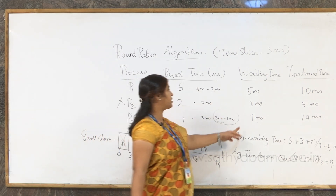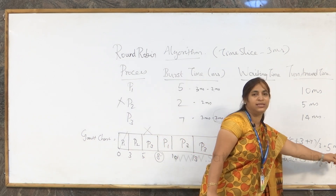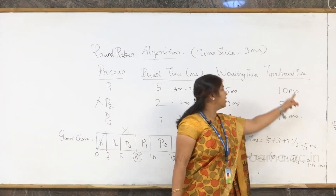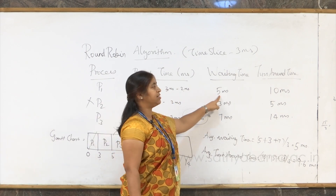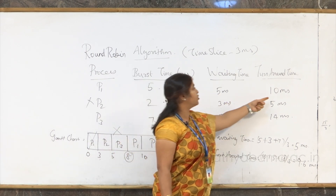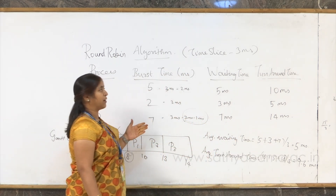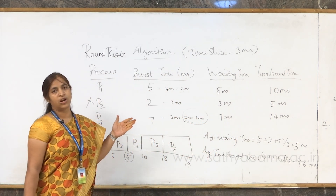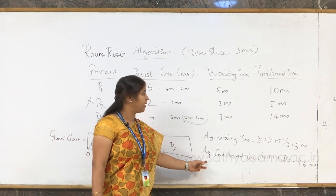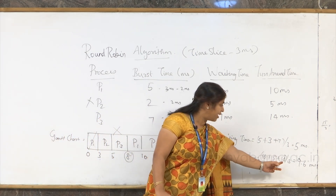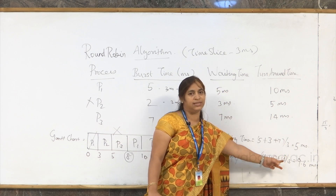Average waiting time is 5 milliseconds. Turnaround times are: P1 — 10 milliseconds, P2 — 5 milliseconds, P3 — 14 milliseconds. Average turnaround time is 10 plus 5 plus 14 divided by 3, which equals 9.6 milliseconds.